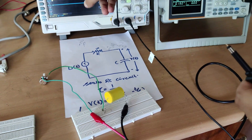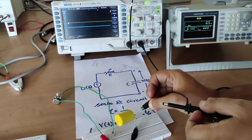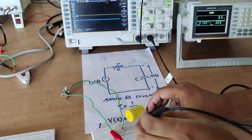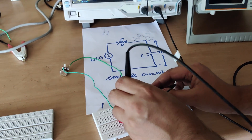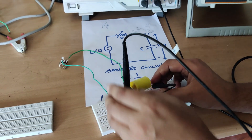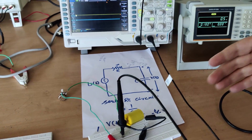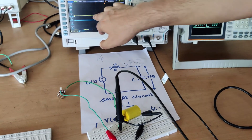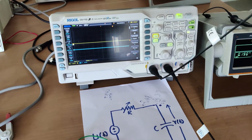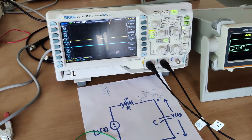Now I will connect one probe across the capacitor so that I can see the behavior of the capacitor on the DSO. You can see the probe connected across the capacitor. By this probe I can see the behavior on the capacitor. I also want to see how the input will look, so I will bring both input as well as output on the DSO. I will connect another probe to see how the input will look.